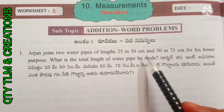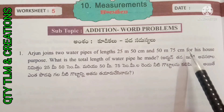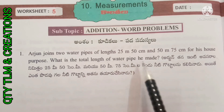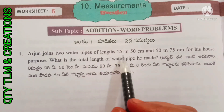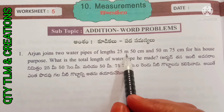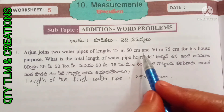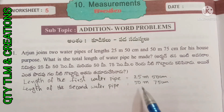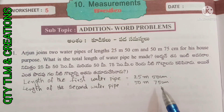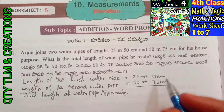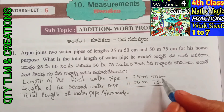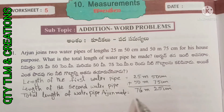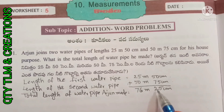First question: Arjun joins two water pipes of lengths 25 meter 50 centimeter and 50 meter 75 centimeter for his house. What is the total length of water pipe he made? Length of the first water pipe is 25m 50cm. Length of the second water pipe is 50m 75cm. Adding centimeters to centimeters and meters to meters, the total length equals 76 meters 25 centimeters.